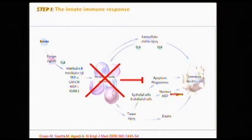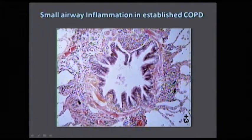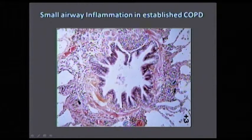Unless this inflammatory stimulus that happens soon after smoking is stopped — and it is stopped in about 80% of smokers, who do not develop any kind of abnormality in the lung — then this will progress into this type of airway that has an enormous amount of inflammatory infiltrate, a very thickened wall, and a smaller diameter.